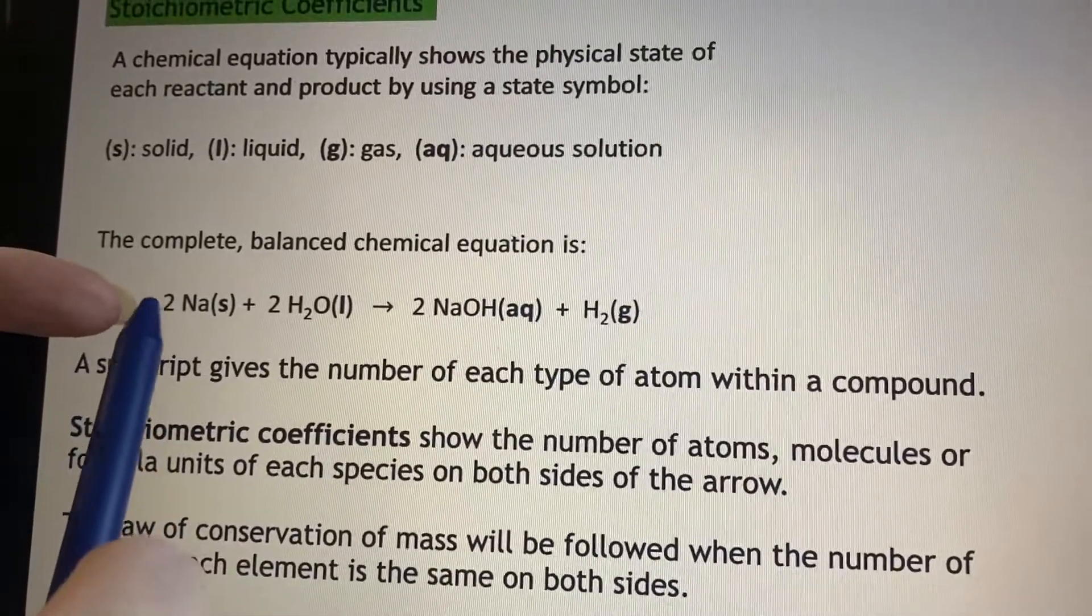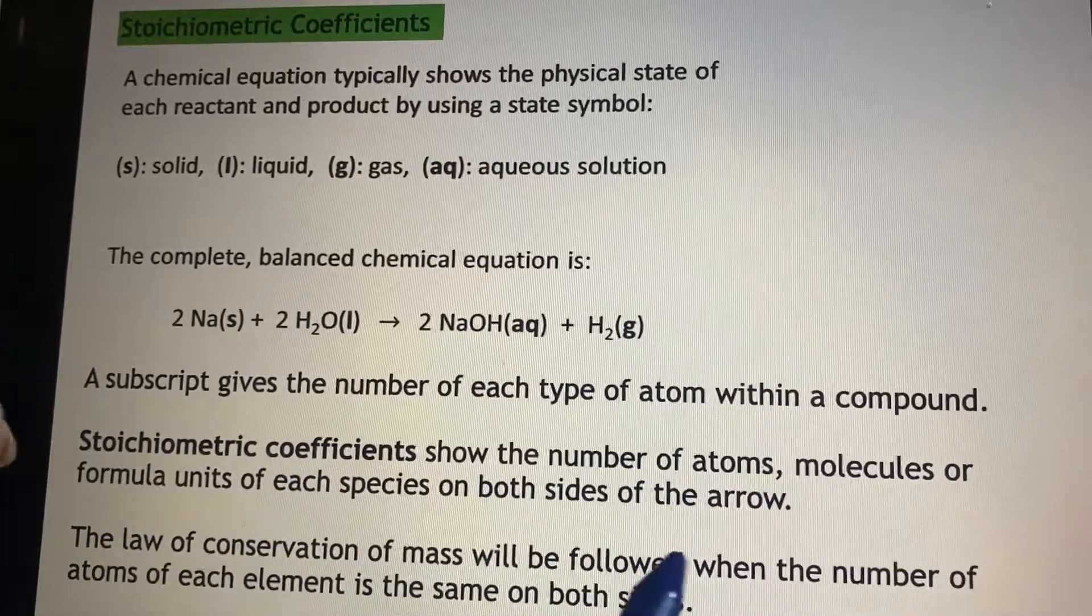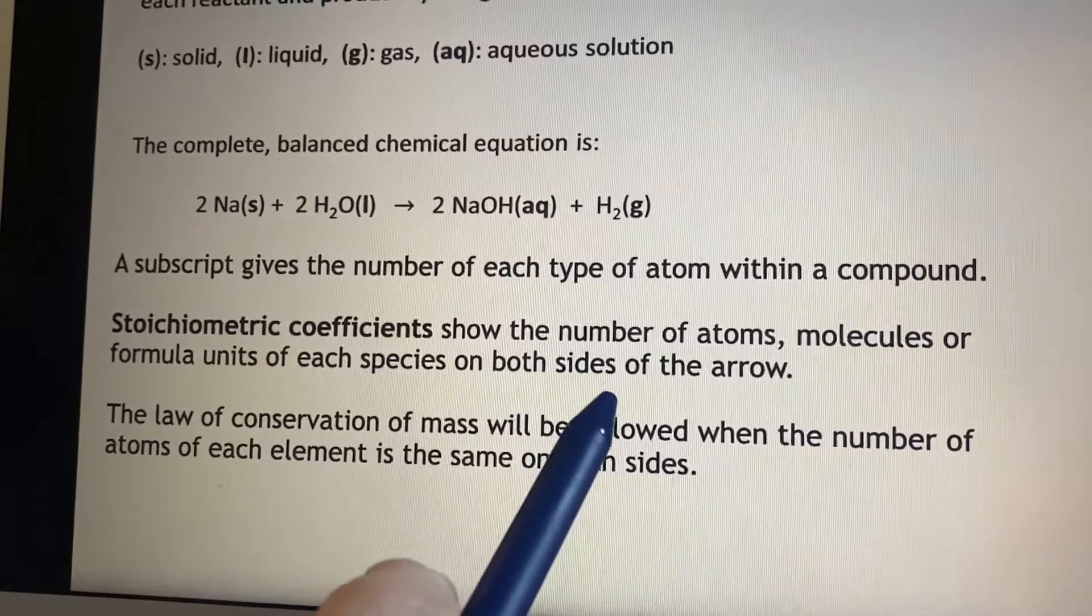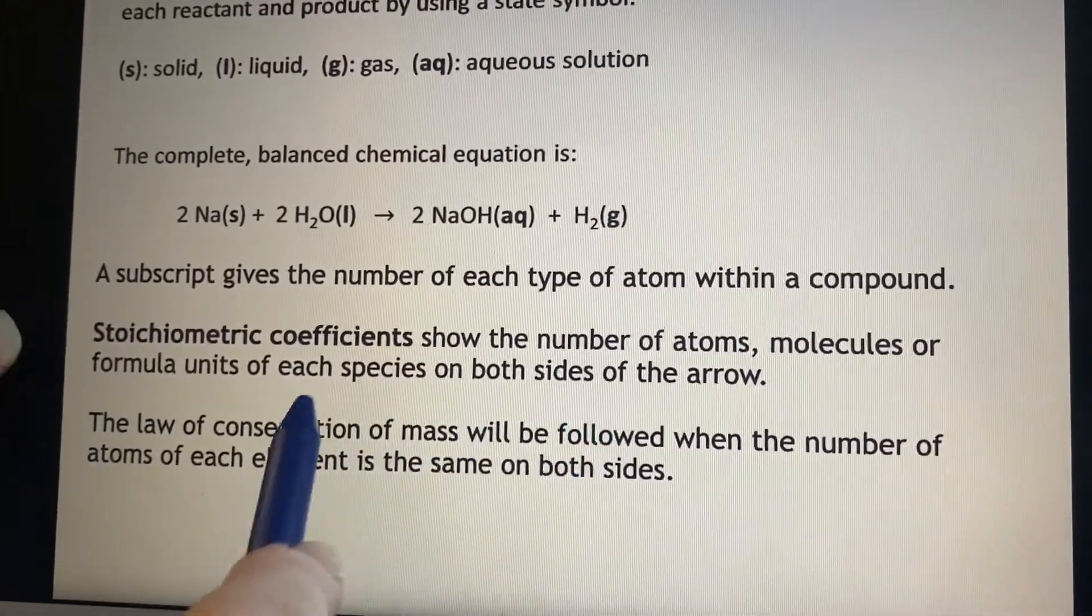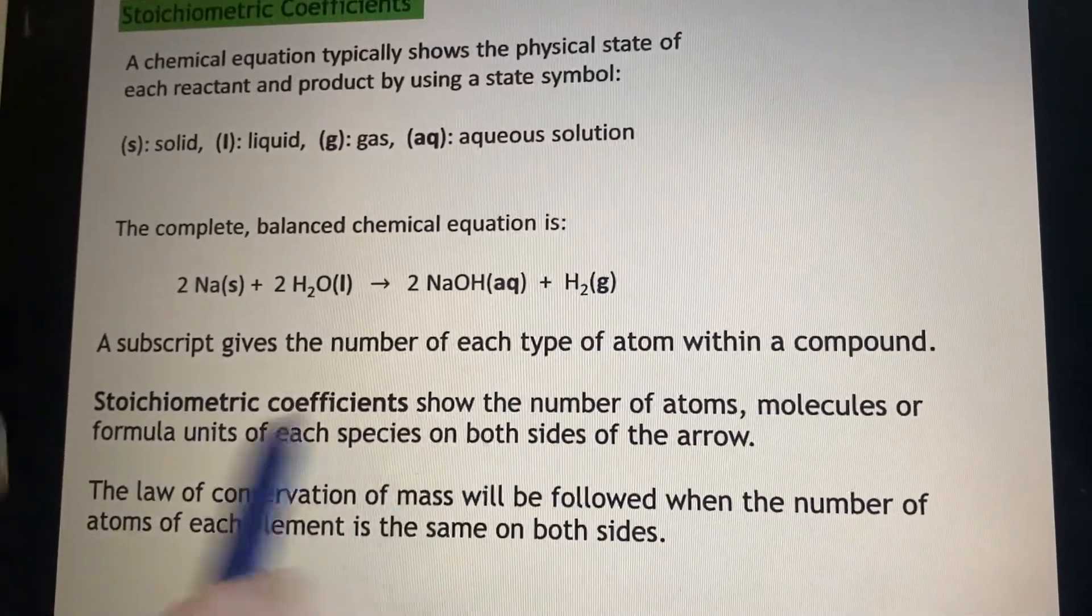But these stoichiometric coefficients are the ones in front of each compound. So they're going to show us the number of molecules, or depending on what it is, it might be atoms or formula units of each species.